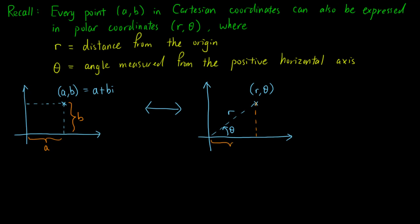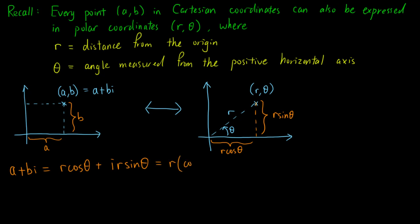The horizontal distance of the point from the origin is r times cos θ, while the vertical distance from the origin is r times sin θ. So a equals r times cos θ and b equals r times sin θ. That means a plus ib can be written as r times (cos θ + i sin θ).